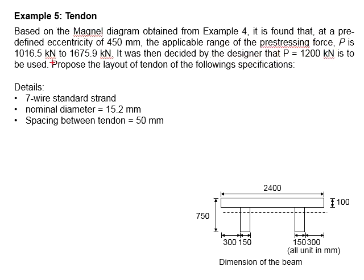It was then decided by the designer that P equals 1200 kN is to be used. The question asks us to propose the layout of tendons based on the specifications provided. The tendons used will be 7-wire standard strand with nominal diameter of 15.2 mm and spacing between tendons of 50 mm.